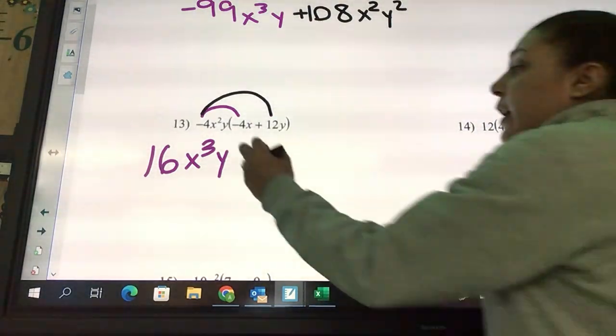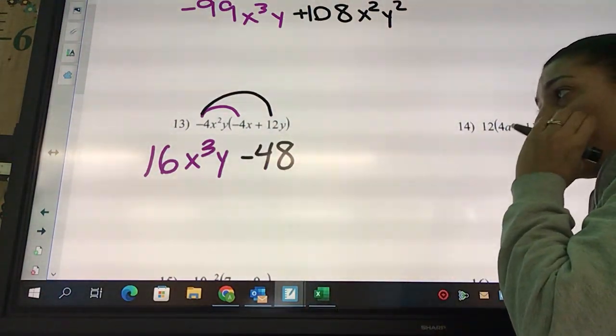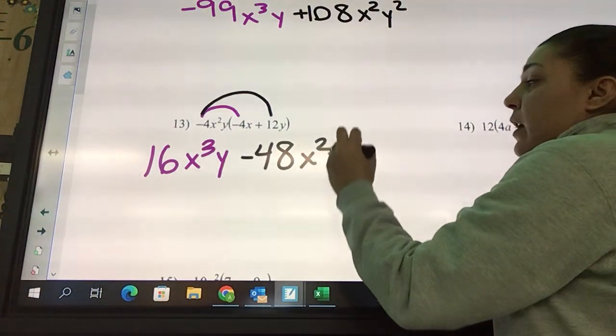Negative 48. What's my letters going to look like? x², y².